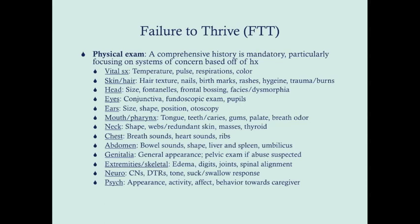Listen to the abdomen first, then palpate. Make sure you feel the liver and spleen, and look at the umbilicus. Consider the general appearance of the genitalia, and if you suspect abuse based on history and physical exam, do a pelvic exam on girls. For extremities and skeletal exam, look for any edema, abnormality of the digits (which can point towards congenital issues), joints, and spinal alignment. Neurologically, look at cranial nerves, deep tendon reflexes, tone, and suck and swallow response. Psychiatrically, look at the appearance, activity, affect, and behavior towards the caregiver — this can point towards abuse, neglect, or behavioral issues.